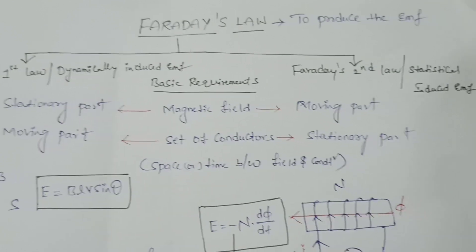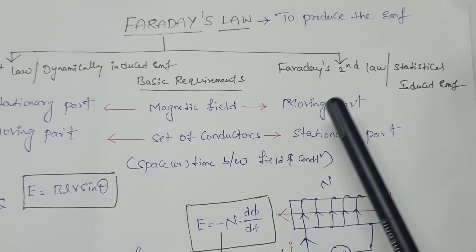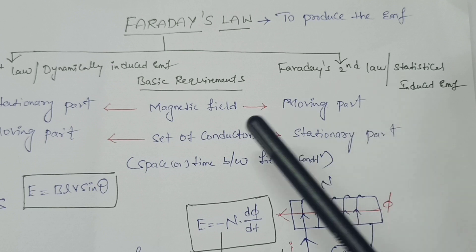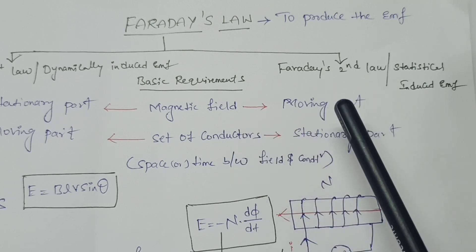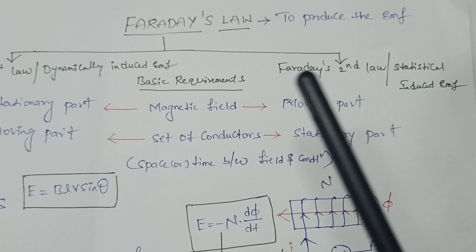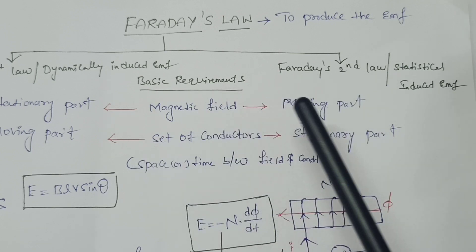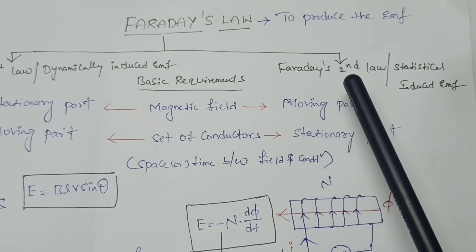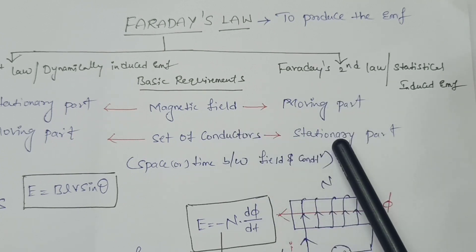In Faraday's second law, we also find an induced EMF using the magnetic field and a set of conductors. The main difference from the first law is that here, the magnetic field is the moving part and the set of conductors is in the stationary position.